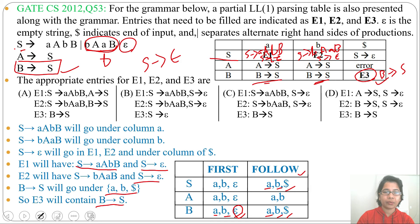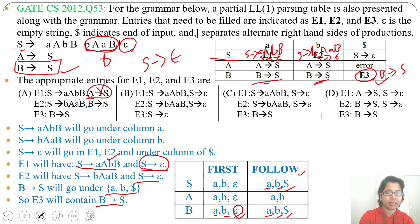Now let's check which option is correct. Option A: E1 has S → AABB — correct. But E2 has A → S — this is wrong. E2 should contain S → epsilon, not A → S. So option A is wrong.